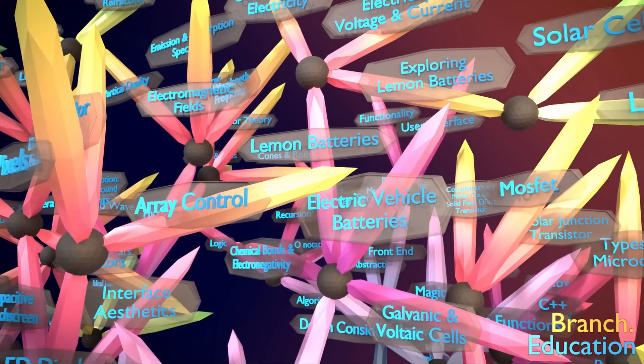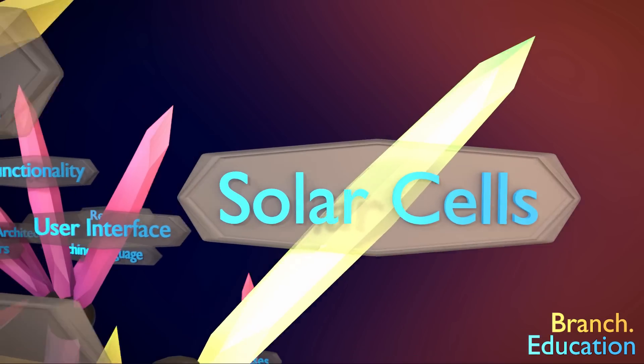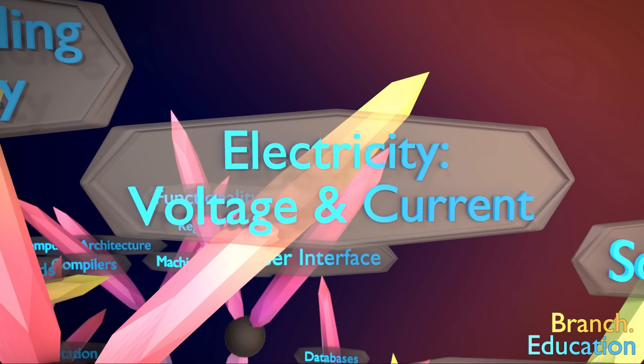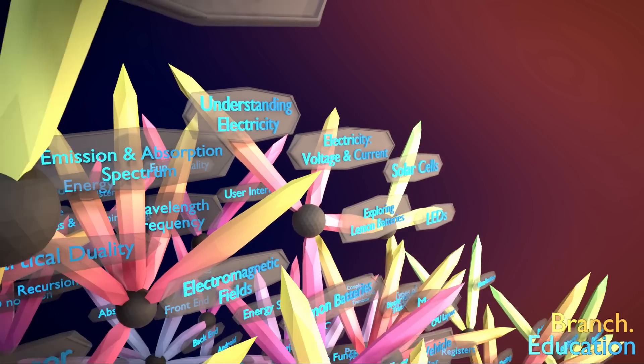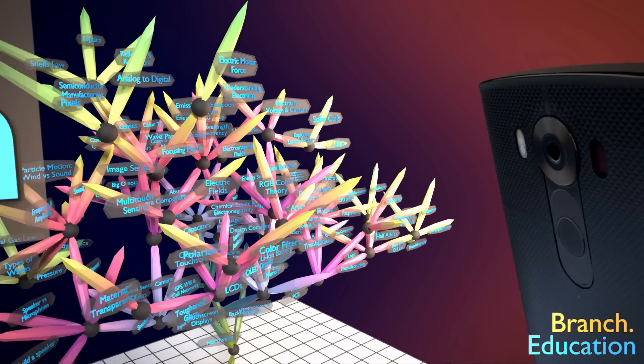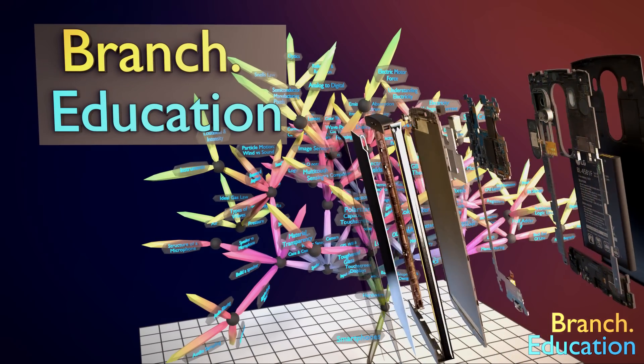This episode branches to how to build lemon batteries, solar cells, understanding current and voltage, and understanding electricity. Also, remember to think about the conceptual simplicity and structural complexity throughout the world around you.